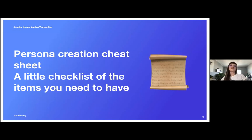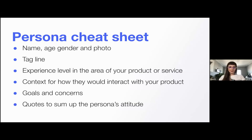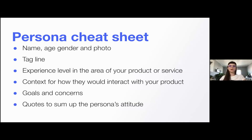Let's go through a persona creation cheat sheet. Common pieces of information to include in a persona: name, age, gender, and photo — but these aren't real demographics and aren't important for realism; they just give more realness to the fictional character. A tagline describes what they do in real life — avoid getting too witty, as doing so may taint your persona. Include experience level in the area of your product, the context for how they would interact with your product — through choice or required by job — how often they would use it, and whether they typically use a desktop computer, phone, or other device.